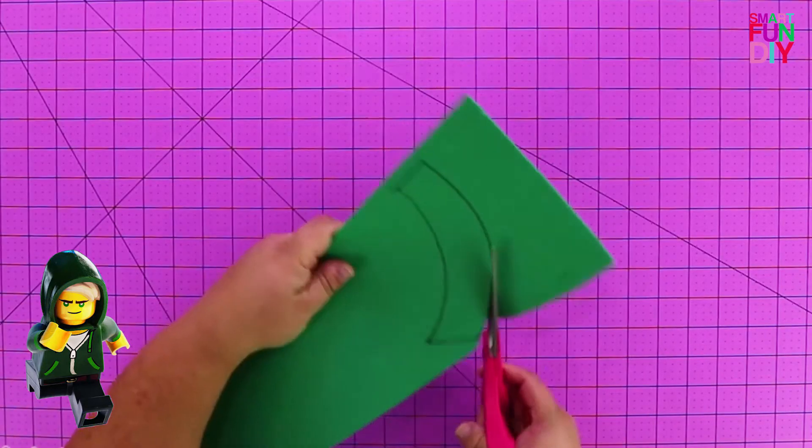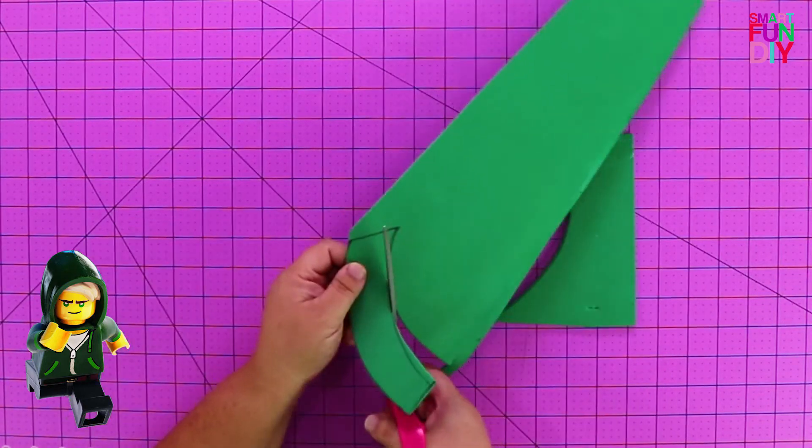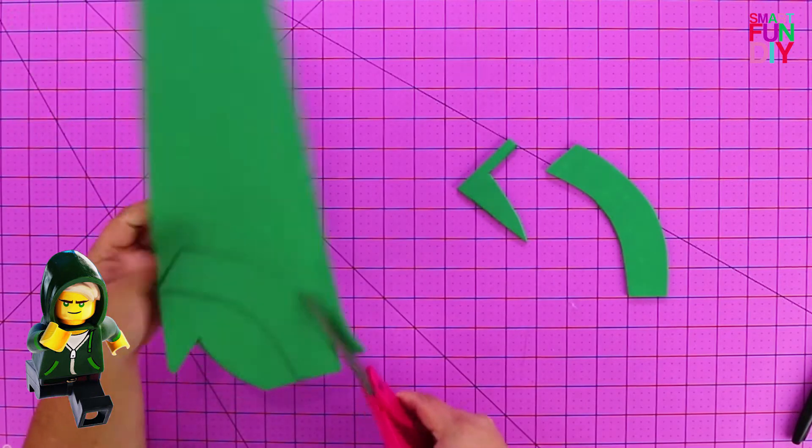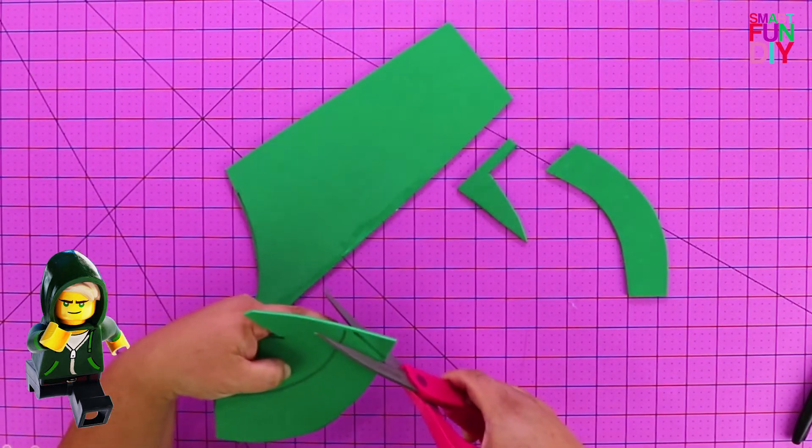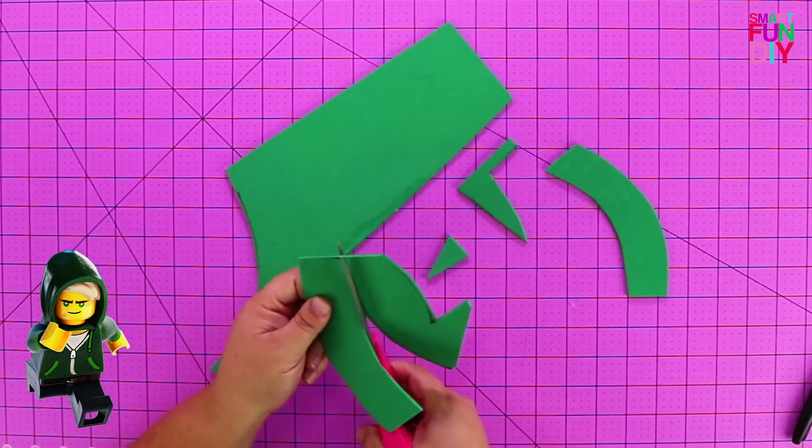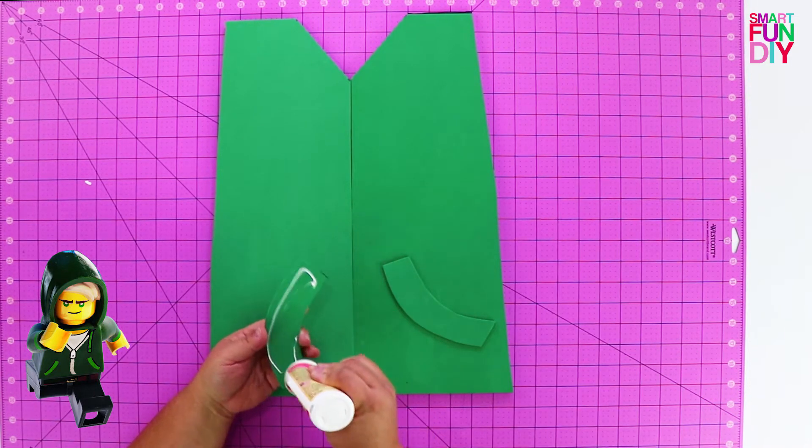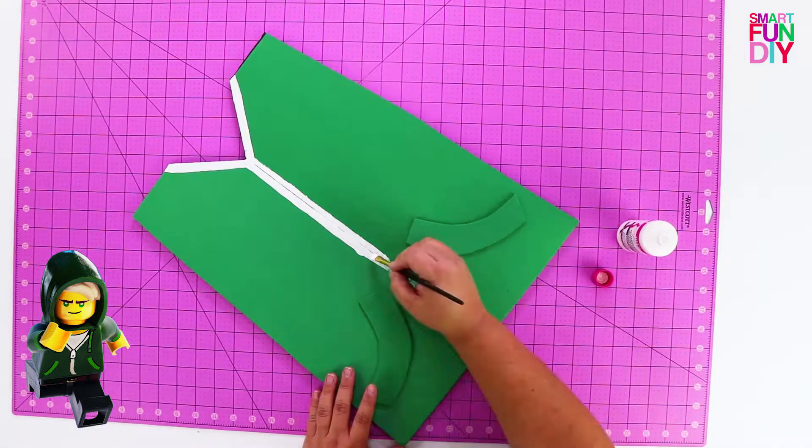There are some details on this sweatshirt. This is for the Lloyd side of the green ninja costume. You're going to cut those pockets out of the excess scrap green foam that's left over. You can cut one and then use the other one as your template, which is what I did here. Glue that with the Felt and Foam Glue so that it doesn't melt.